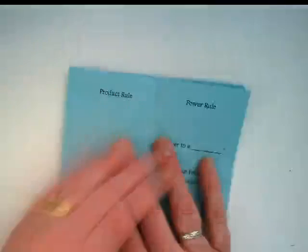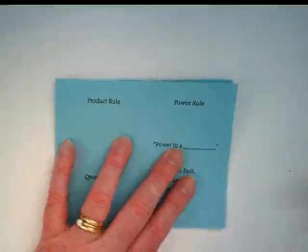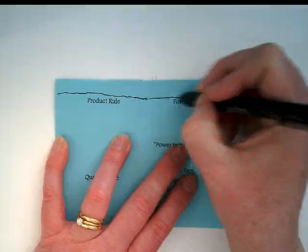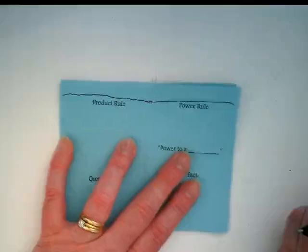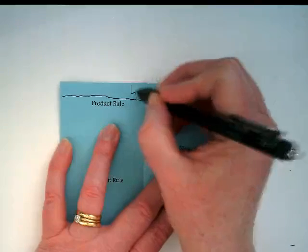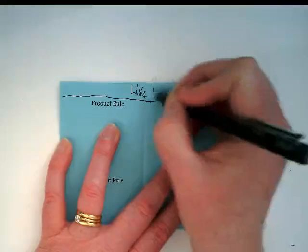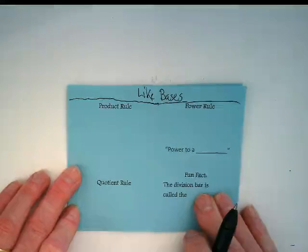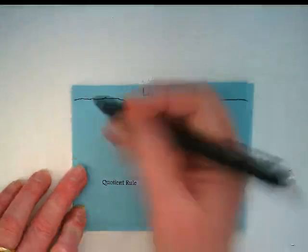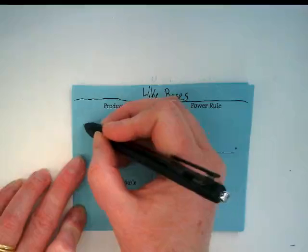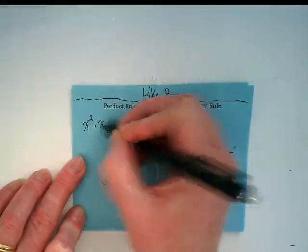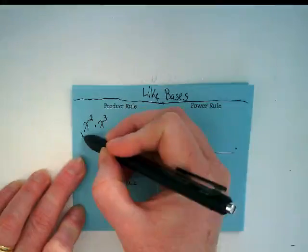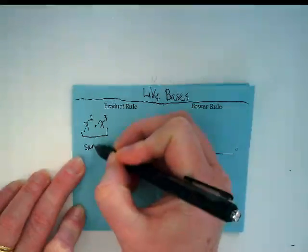Turn to the next page and I want you to draw a line all the way across the top of the page above where it says Product Rule and Power Rule. We are going to title the top of this Like Bases. We are starting with the Product Rule. I would like you to put x squared times x cubed and show that those have the same base.